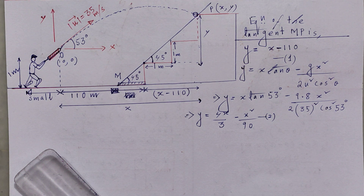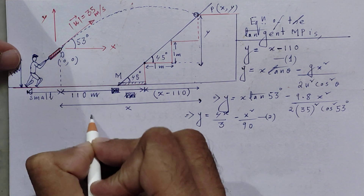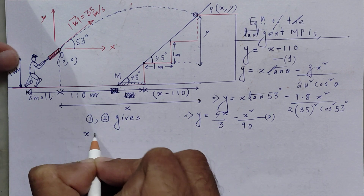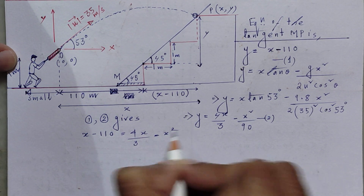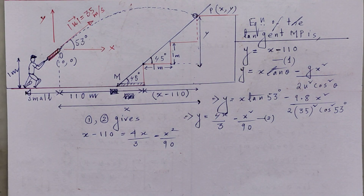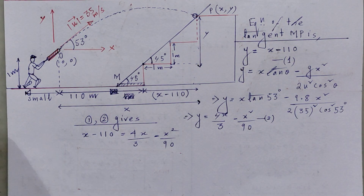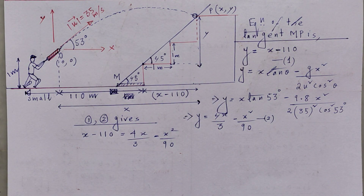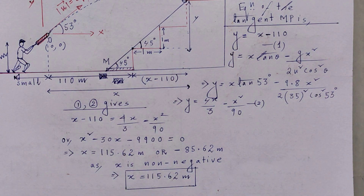From equations 1 and 2, we equate the right-hand sides: x − 110 = 4x/3 − x²/90. This is clearly a quadratic equation. Solving it, we can find x, which is the horizontal distance from the origin to the point where the ball strikes the gallery.